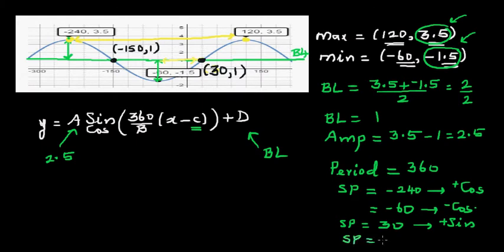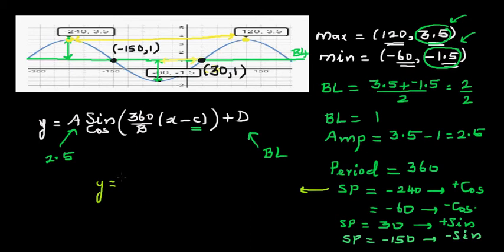I'm going to write four equations of the same graph. First, starting at −240 (the maximum), it's a positive cosine graph: y = 2.5 × cos(1 × (x − (−240))) + 1, which simplifies to y = 2.5 cos(x + 240) + 1.